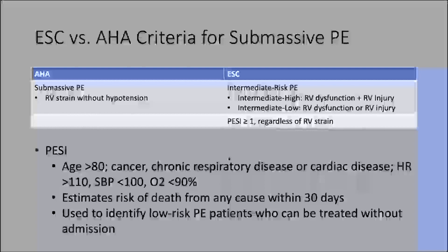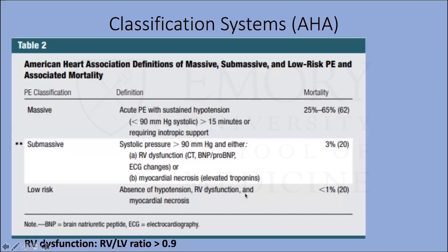Low-risk PE accounts for about 40–60% of hospitalized patients with acute PE and a very low mortality rate of less than 1% at 30 days. We're comfortable treating these patients with anticoagulation, not even necessarily requiring hospitalization. We won't focus much time on these today.